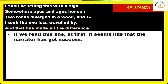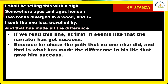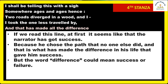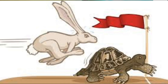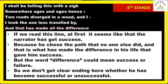Initially it seemed the second road was a slightly better option, but after walking it, both roads appeared the same. In the last line, 'that has made all the difference' — at first it seems like the narrator succeeded because he chose a unique path. But the word 'difference' is also ambiguous — it could mean success or failure. So we don't get a clear ending as to whether the narrator became successful or unsuccessful.